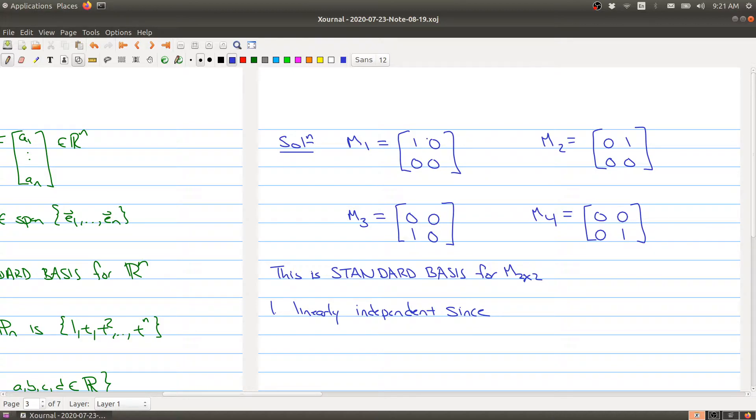And this is called the standard basis for M22. So it looks a lot kind of like the standard basis for Rn, where in that case we also had a 1 in each particular spot that was possible and then 0 everywhere else. And let's just double check why this is a basis.